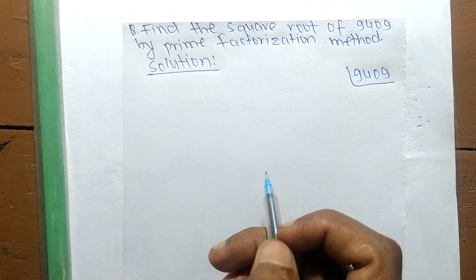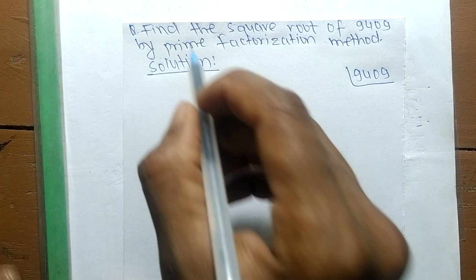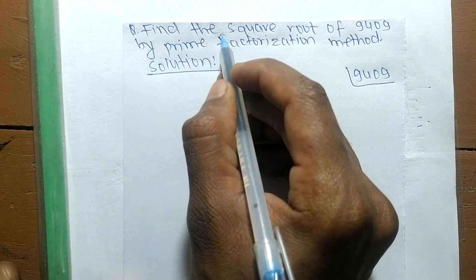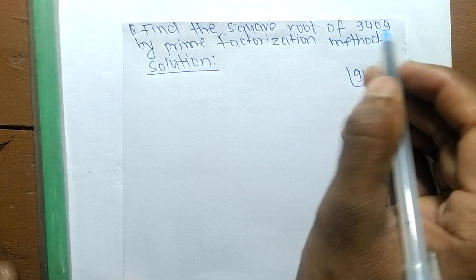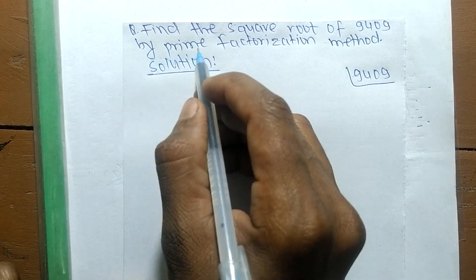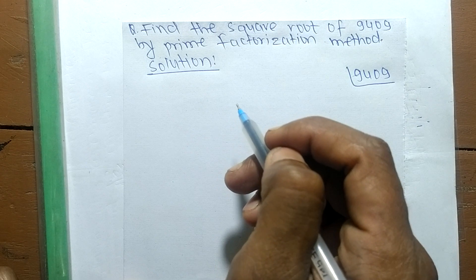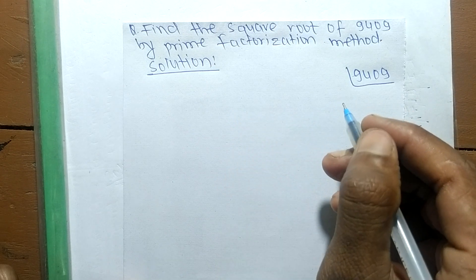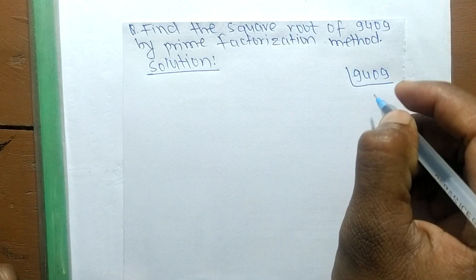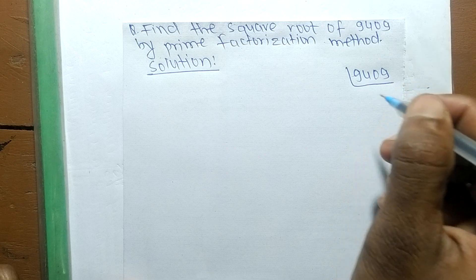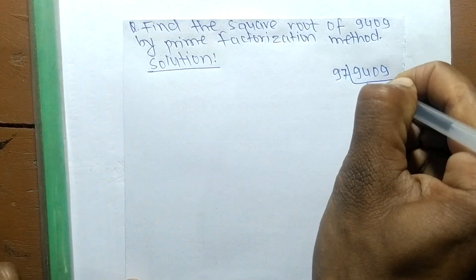Today in this video we shall learn to find the square root of 9409 by the prime factorization method. First, we have to find out the prime factors of 9409. Its prime factorization is 97 times 97.